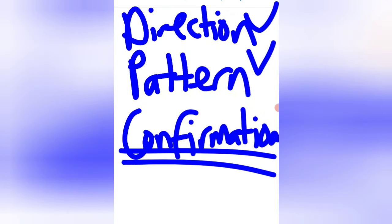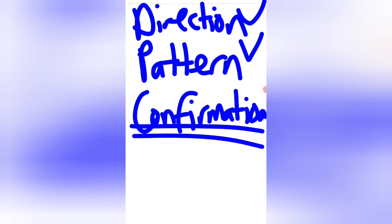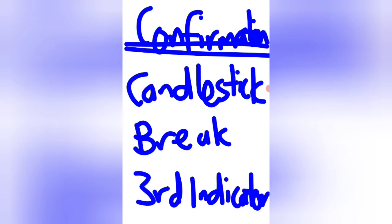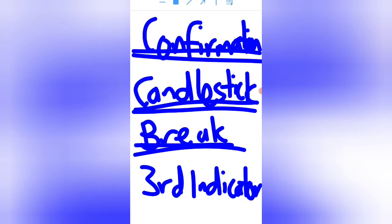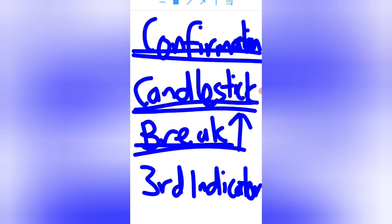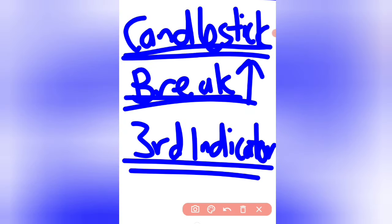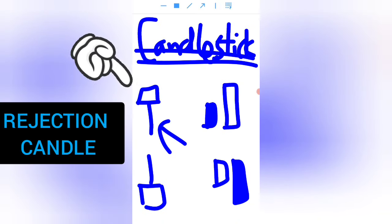One thing that most people leave out of their strategies — which is the reason they struggle day after day — is having confirmation for the entries they're taking. There are different ways to get confirmation: it can be a candlestick pattern just before your entry, or a breakout of a resistance level. One other way is by using a third indicator that tells you the market is really going up. The easiest confirmation when starting out is candlestick patterns.